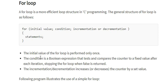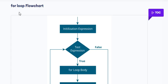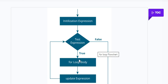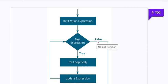The flowchart for the for loop starts with the initial value, then we check the test condition. If the condition is true, it goes inside the for loop body; if false, it exits the loop. Inside the body, we perform the update expression — increment or decrement — and then loop back to the test condition. This repeats until the test condition becomes false.